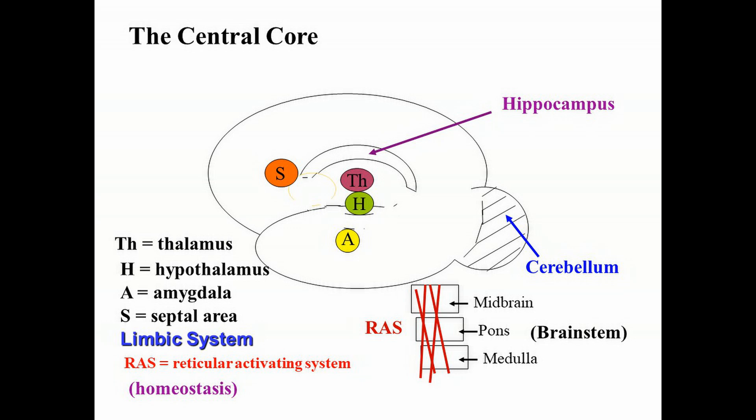Answering that question requires knowing the parts of the brain stem, the parts of the limbic system, and the lobes of the cerebral cortex, as well as the sequence in which they evolved. The brain stem is the oldest, followed by the limbic system, followed by the cerebral cortex. Know this and you should be fine answering that question.